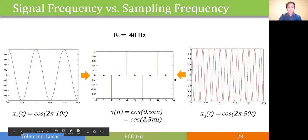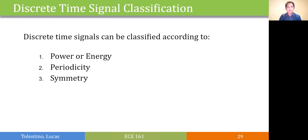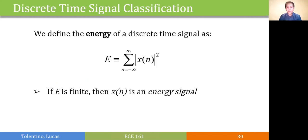On to our signal classification. Most discrete time signals can be classified according to their power or energy, the periodicity, or the symmetry. We say that a discrete time signal x of n is an energy signal if the sum of the squares of its samples will result to a finite value.